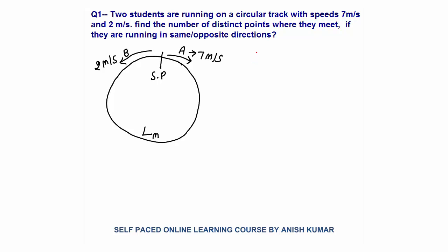First I will calculate when both of them will reach the starting point for the first time. A will reach the starting point after every how many seconds? A has to cover a distance of L meters — that is the length of the track — and the speed of A is 7 meters per second. So time A will take is L/7 seconds. B will reach the starting point after every L/2 seconds, because B covers distance L at speed 2.